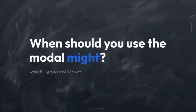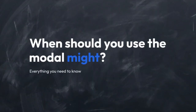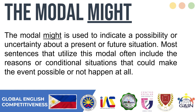When should you use the modal might? The modal might is used to indicate a possibility or uncertainty about a present or future situation. Most sentences that utilize this modal often include reasons or conditional situations that could make the event possible or not happen at all.